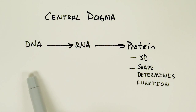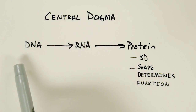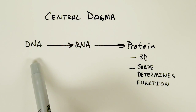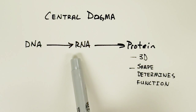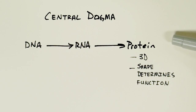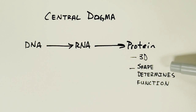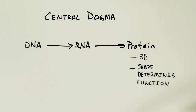Another important concept to help you understand how these viruses work is the idea of the central dogma of biology. Essentially the central dogma is the idea that DNA, or deoxyribonucleic acid, is used as a template for the production of an intermediate that we call RNA, or ribonucleic acid. And ultimately that RNA is then utilized as a template to create proteins. What's interesting about proteins is they tend to be three-dimensional in shape, and their shape will help determine their function. We will see how this comes into play when we talk about the proteins involved in influenza A.